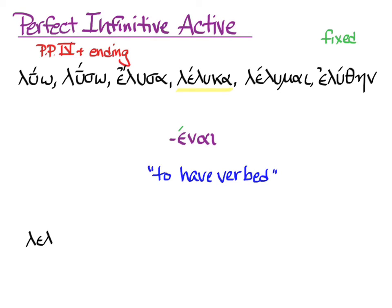We go to the fourth principal part, take off the alpha, and we get the stem λελυκ. We add the ending with its accent, έναι. And we get λελυκέναι, to have freed. Let's try it with two other verbs. For to have educated, we need the fourth principal part of παιδεύω. πεπαίδευκ is the stem, plus the ending with its accent. And we get πεπαιδευκέναι, and that is to have educated.